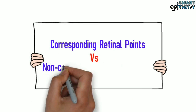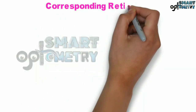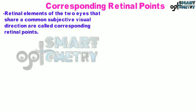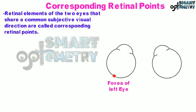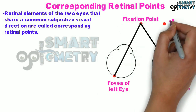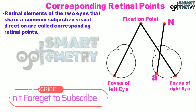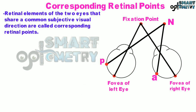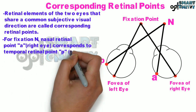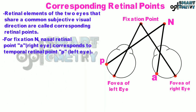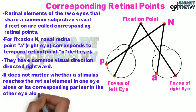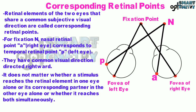Corresponding Retinal Points are retinal elements of the two eyes that share a common subjective visual direction. In the diagram, the fovea of the left eye and the fovea of the right eye are stimulated simultaneously by a common fixation point straight ahead. Another point N stimulates the corresponding nasal retinal point A in the right eye and the temporal retinal point P in the left eye, giving them a common visual direction. It does not matter whether the stimulus reaches the retinal element in one eye alone or both simultaneously.